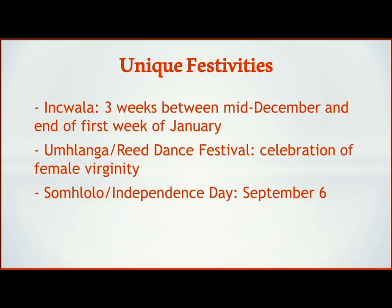The next holiday is the Umhlanga, or Reed Dance Festival — a celebration of female virginity. It was originally believed that celebrating the virginity of young girls before marriage would promote abstinence from premarital sex. In the early 2000s it was promoted further as a sex ban that the king instated to help prevent the spread of HIV, but that was met with anger and discouragement, and he eventually removed the ban. The festivity is meant to preserve the belief against premarital sex.